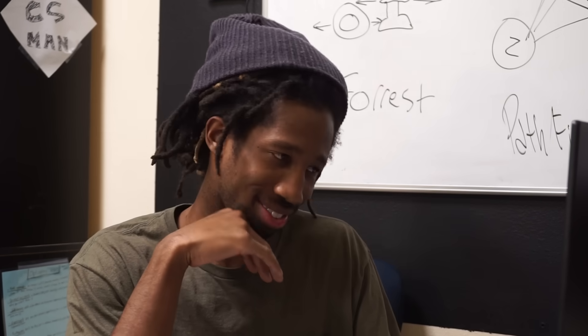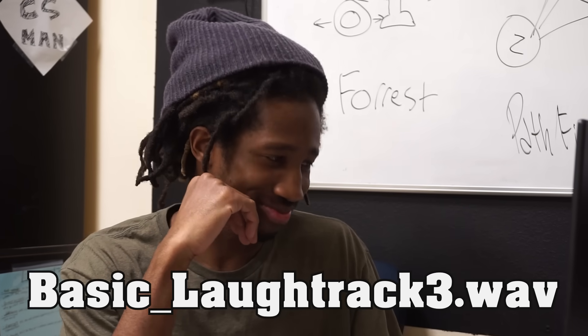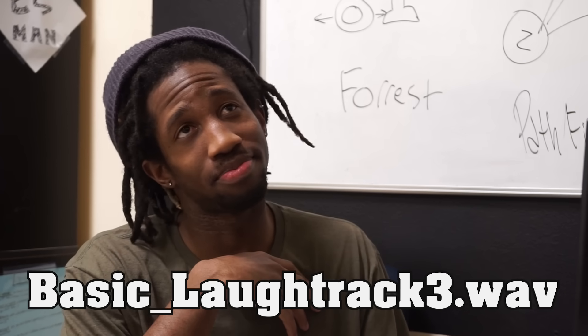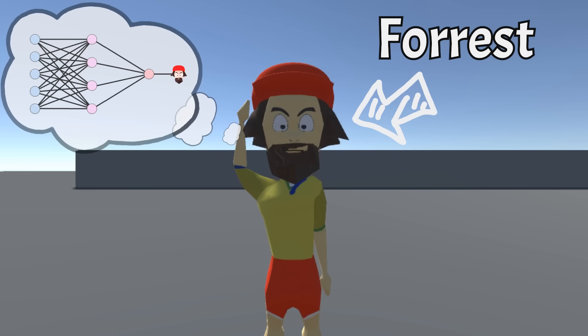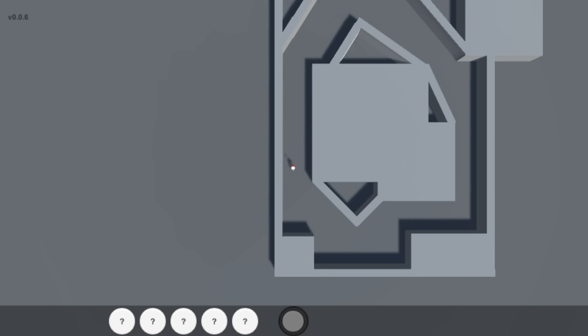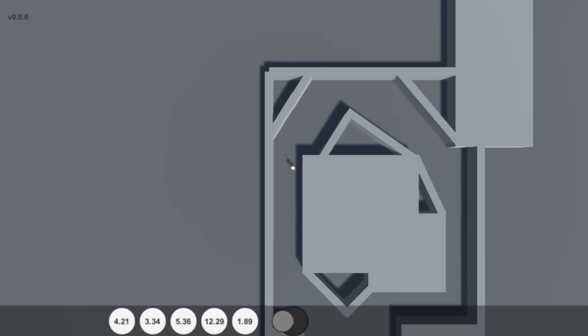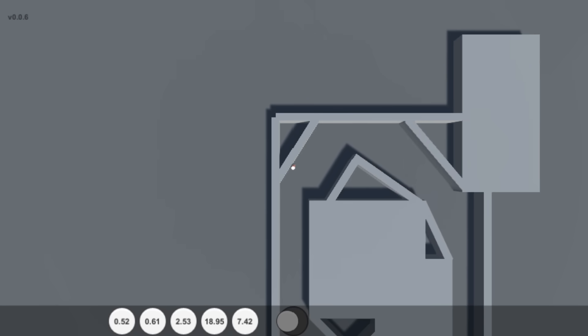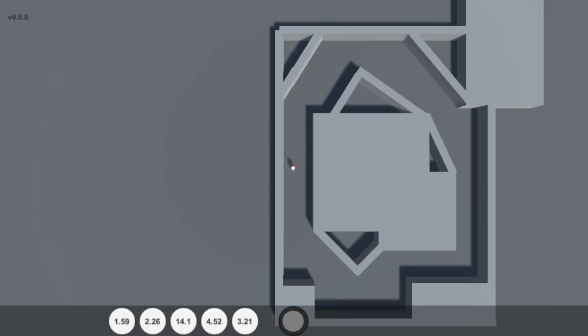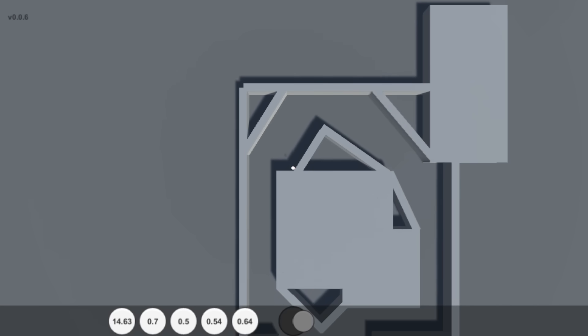Ah yes, basic underscore laugh track three dot wav. At least you always understand me. Anywho, Forrest is still far away from showing any signs of intelligence. You'll see that if we give him this brain with random values and watch what he does with the joystick, it's a little better, I guess, but still far from intelligent.